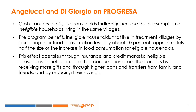What are the results from this American Economic Review paper by Angelucci and DiGiorgio? Cash transfers to eligible households indirectly increase the consumption of ineligible households living in the same village. The program benefits ineligible households in treatment villages by increasing food consumption by about 10%, approximately half the size of the increase for eligible individuals. According to the authors, this effect operates through insurance and credit markets — ineligible households benefit by receiving more gifts, through higher loans and transfers from family and friends, and by reducing their savings.